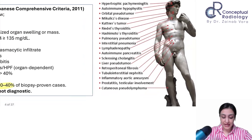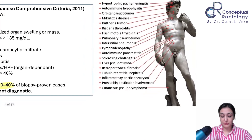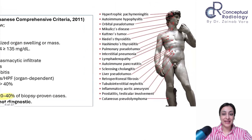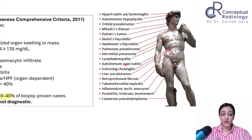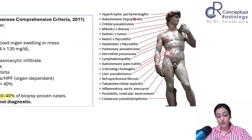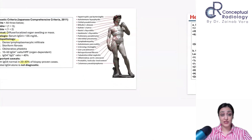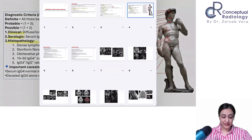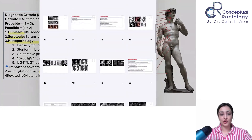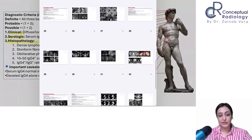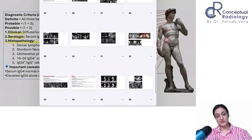You can make a head-to-toe diagram to map all involvements — a useful method for any multisystemic disorder. This class is arranged the same way: we will talk about head and neck, then thorax, then abdomen and miscellaneous.